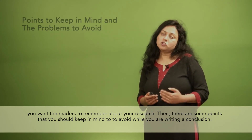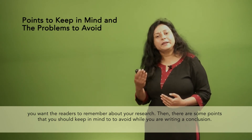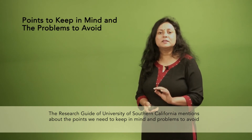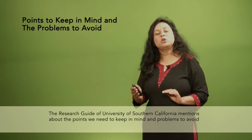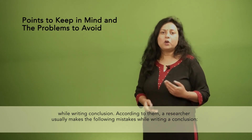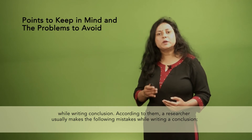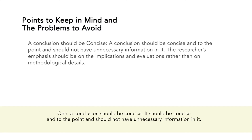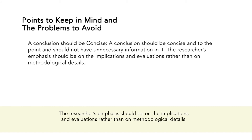There are some points you should keep in mind to avoid while writing a conclusion. The research guide of the University of Southern California mentions the points we need to keep in mind and problems to avoid while writing a conclusion. A researcher usually makes the following mistakes: first, a conclusion should be concise — it should be concise and to the point and should not have unnecessary information. The researcher's emphasis should be on implications and evaluation rather than on methodological details.